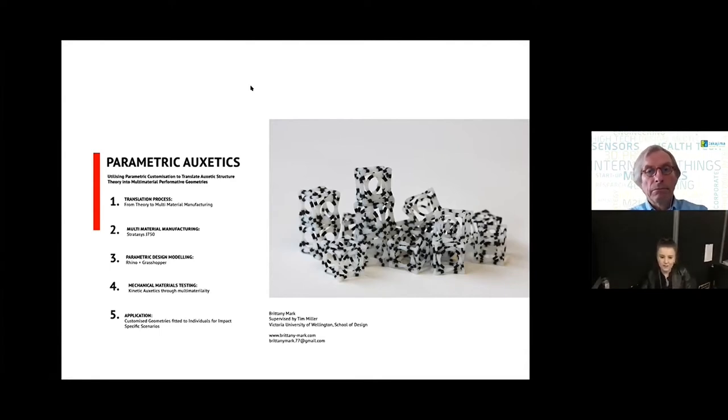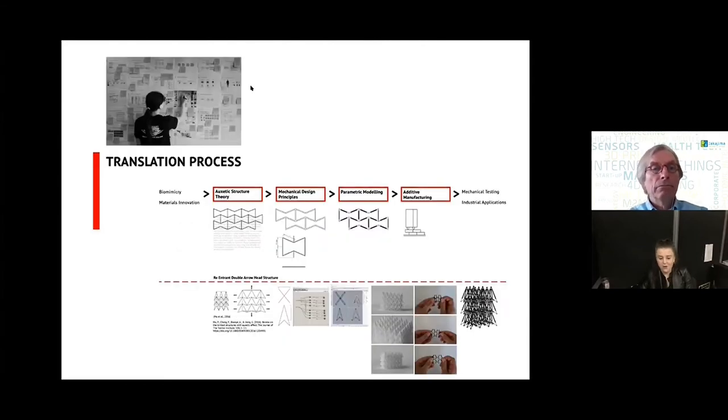So the process that we go through is structure theory. The structures were chosen based on a range of criteria but primarily the ones that were chosen to be manufactured were biaxial and three-dimensional. Then the mechanical design principles are translated through computational Rhino and Grasshopper and then they are put through an optimization software to enable additive manufacturing and then they are multi-material printed on the J750 and then mechanically tested and then applied. So you can see an example of the re-entrant double arrow which was the first testing that we went through the entire process.